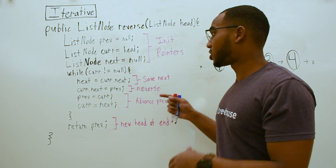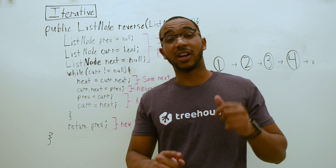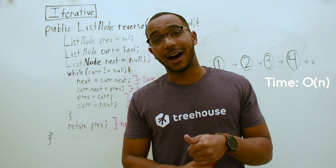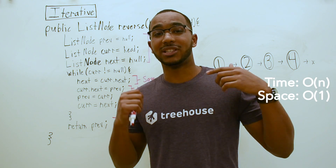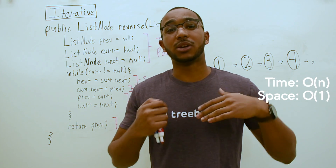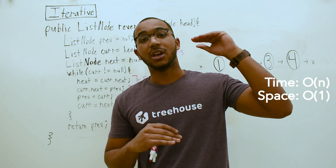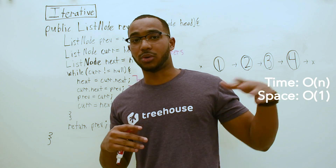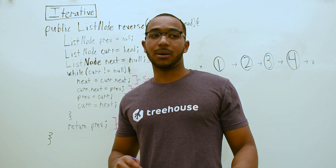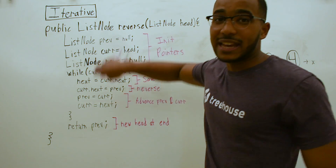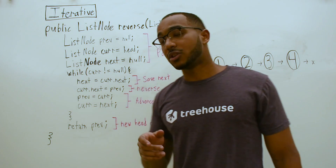This is how we reverse a linked list iteratively. This is going to run in O(n) time because we're going to touch n nodes, and O(1) space because we're not going to be creating space that scales as our input gets large. We're only going to keep constant variables — just pointers. This is basically how it pans out: we're going to initialize pointers.